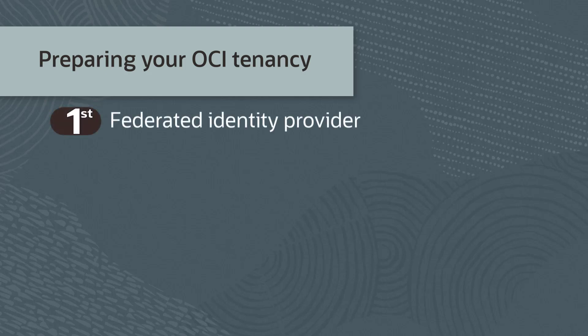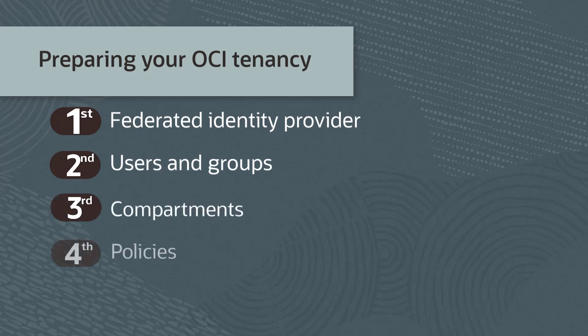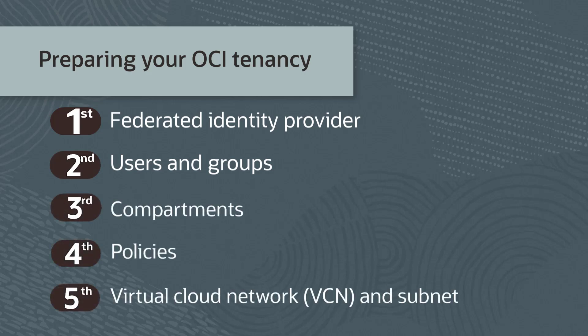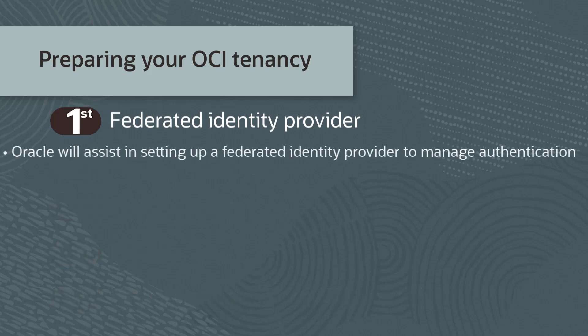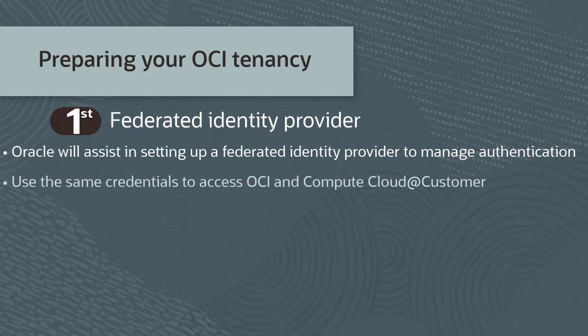The items to set up include: Federated Identity Provider, Users and Groups, Compartments, Policies, and Virtual Cloud Network, or VCN, with a subnet. Your Oracle representative will assist you in setting up a Federated Identity Provider to manage authentication. You will use the same credentials to access Oracle Cloud Infrastructure and Compute Cloud at Customer. If your OCI tenancy is already configured, share your Federated Identity information with your Oracle representative.